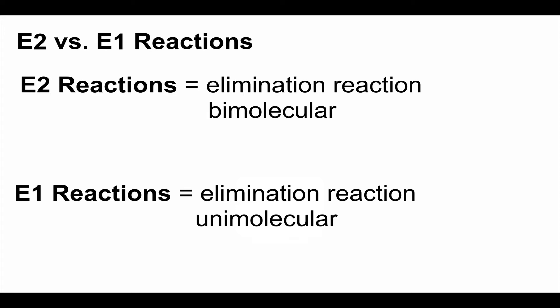Elimination is favored at higher temperatures. Looking at ΔG = ΔH − TΔS, entropy is affected by temperature. In an elimination reaction, your starting material is changed into more things than it started with — you are shedding things from the backbone of a molecule, which increases entropy. When you raise the temperature, that makes ΔG more negative, making the reaction more spontaneous and favoring elimination.